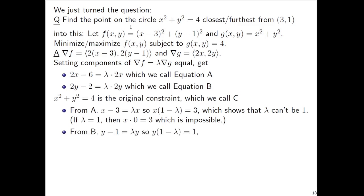From equation B, we divide both sides by 2 and get y - 1 = λy. By rearranging in the same way, y(1 - λ) = 1. We actually rediscover the fact that λ can't be 1.